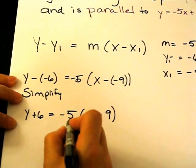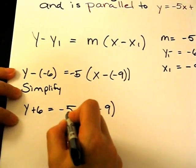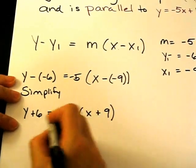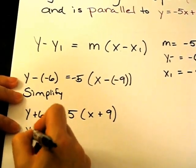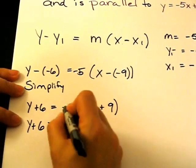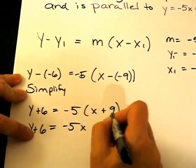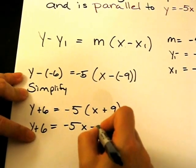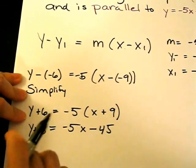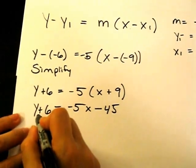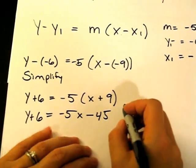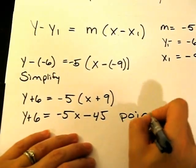And then from there I'm going to take this and distribute the -5 to each piece of this, which is going to look like y + 6 = -5x. This negative changes that positive into a negative. 5 times 9 is 45. New equation is y + 6 = -5x - 45. This is the point-slope form.